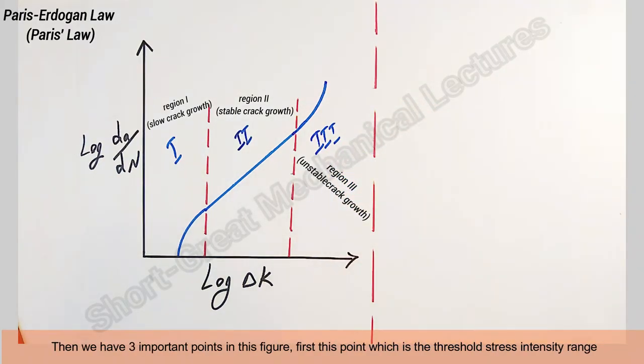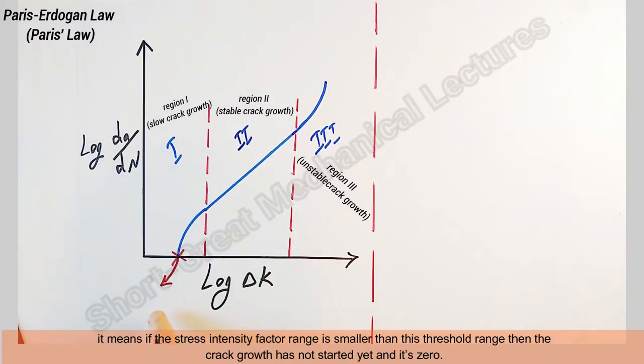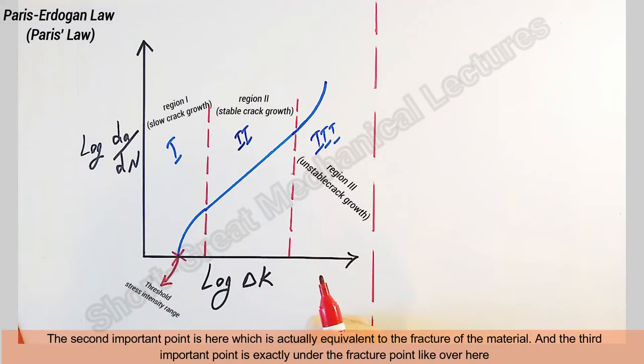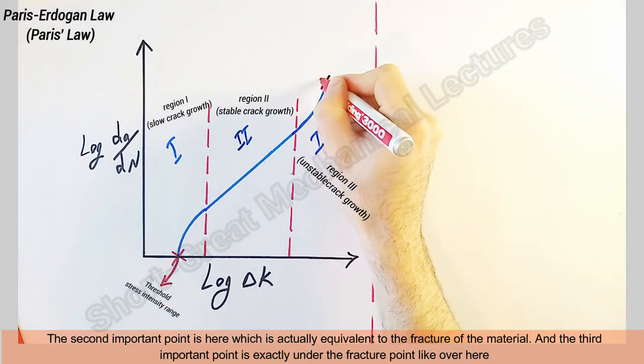Then we have three important points in this figure. First, this point which is the threshold stress intensity range. It means if the stress intensity factor range is smaller than this threshold range, then the crack growth has not started yet and it's zero.